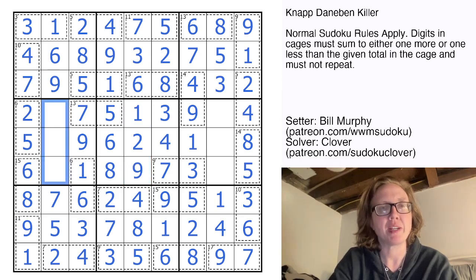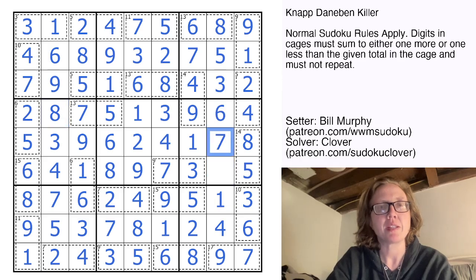These will be three, four, and eight. Finish this region. And these cells are going to be two, six, and seven.